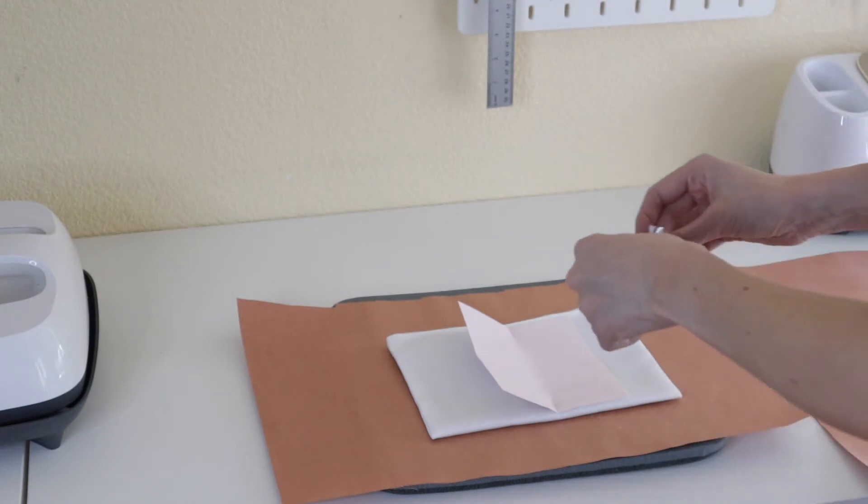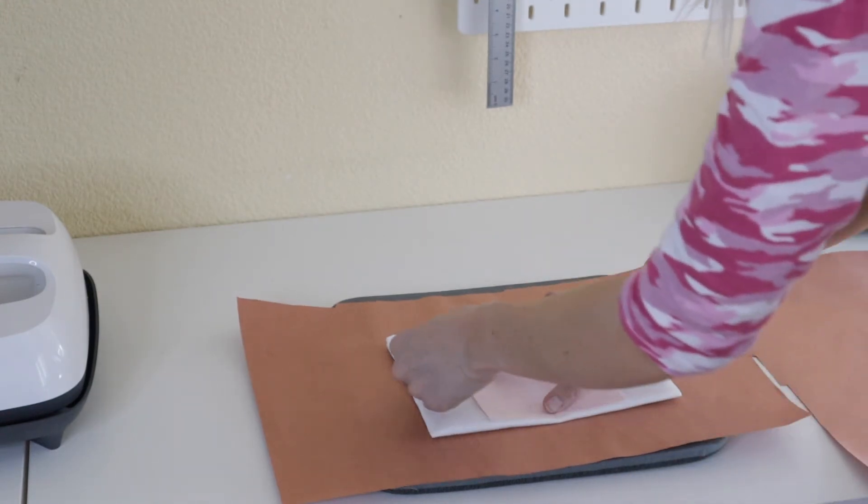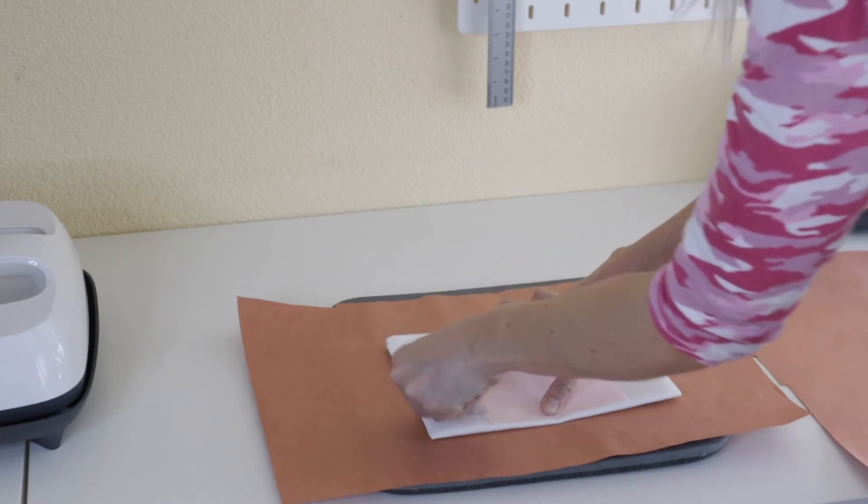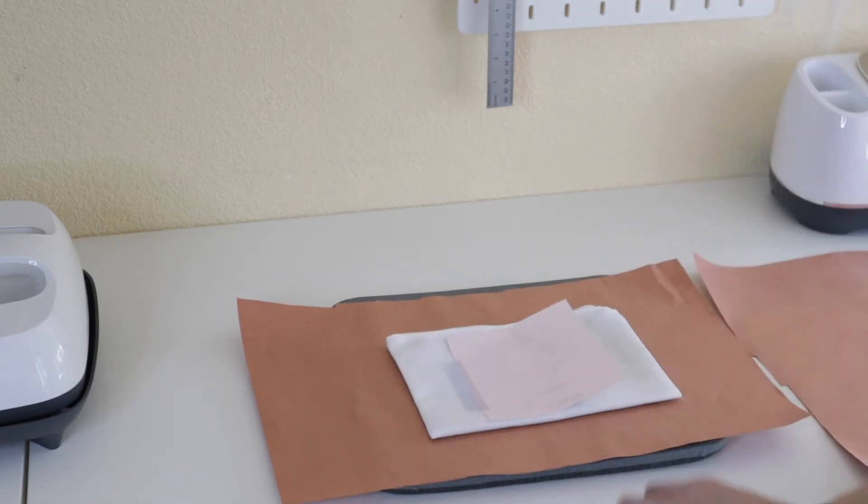I like to use four pieces of tape when I'm using the Cricut EasyPress just to make sure that I don't move my image around because that will cause ghosting.